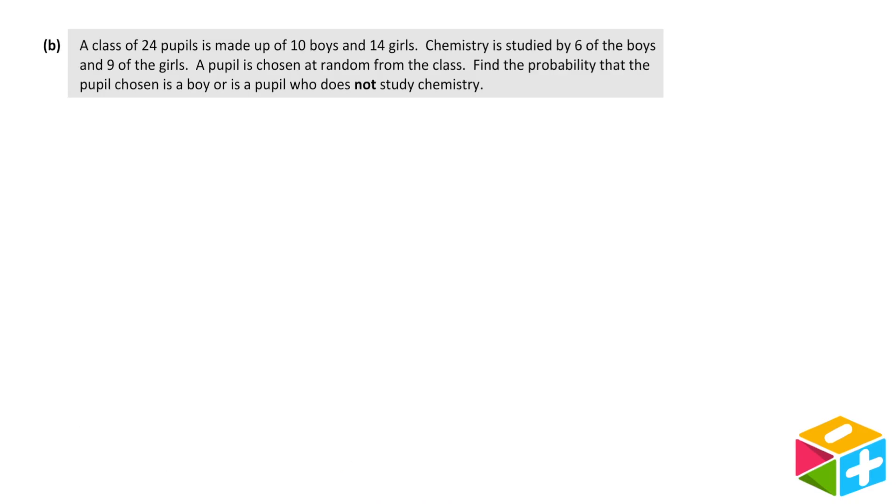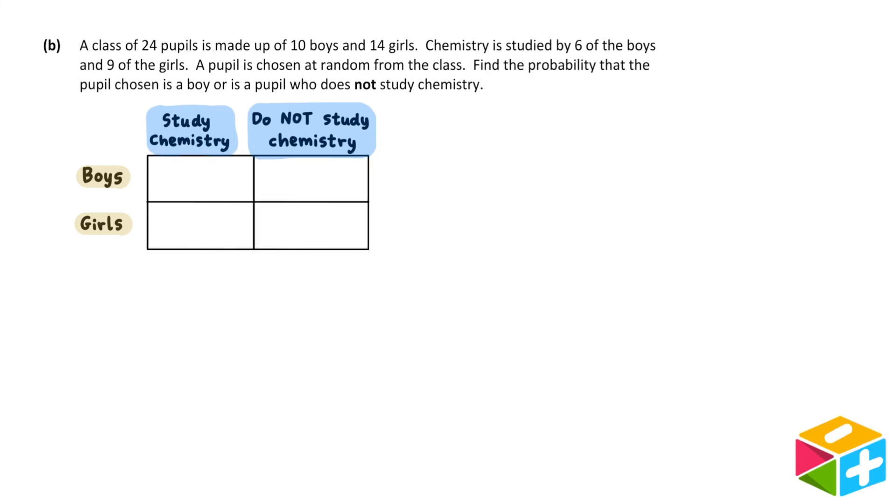Part B. A class of 24 pupils is made up of 10 boys and 14 girls. Chemistry is studied by 6 of the boys and 9 of the girls. A pupil is chosen at random from the class. Find the probability that the pupil chosen is a boy or is a pupil who does not study chemistry. Given a student in this class, there's two questions we're concerned with. Firstly, is the student a boy or a girl? And secondly, do they study chemistry or do they not study chemistry? It will be useful to draw a table and split up the students based on these two questions.